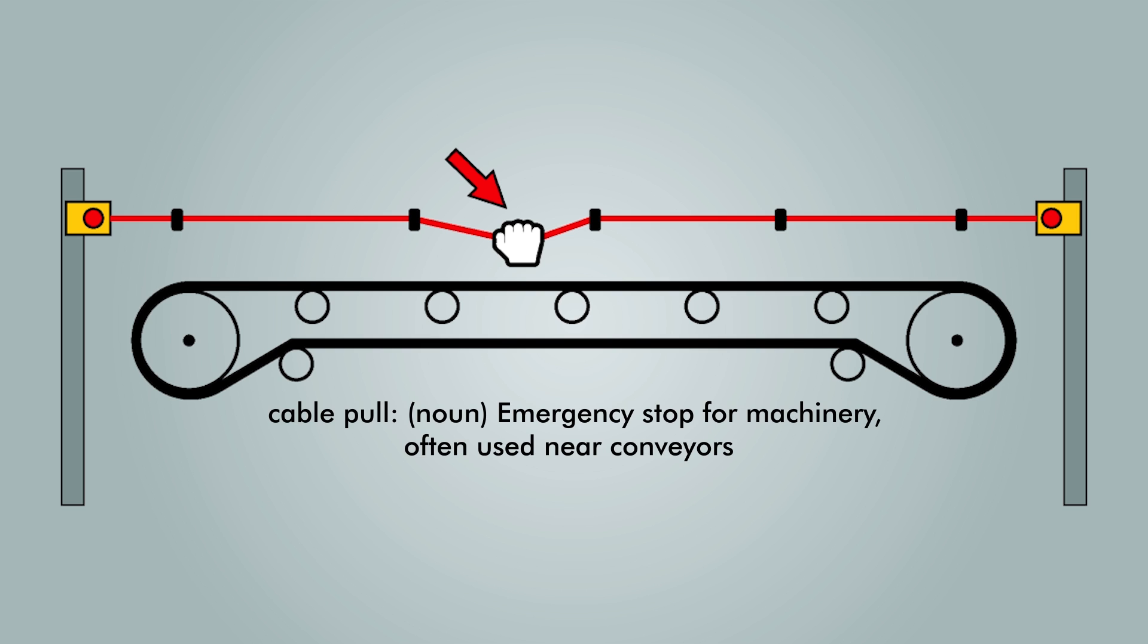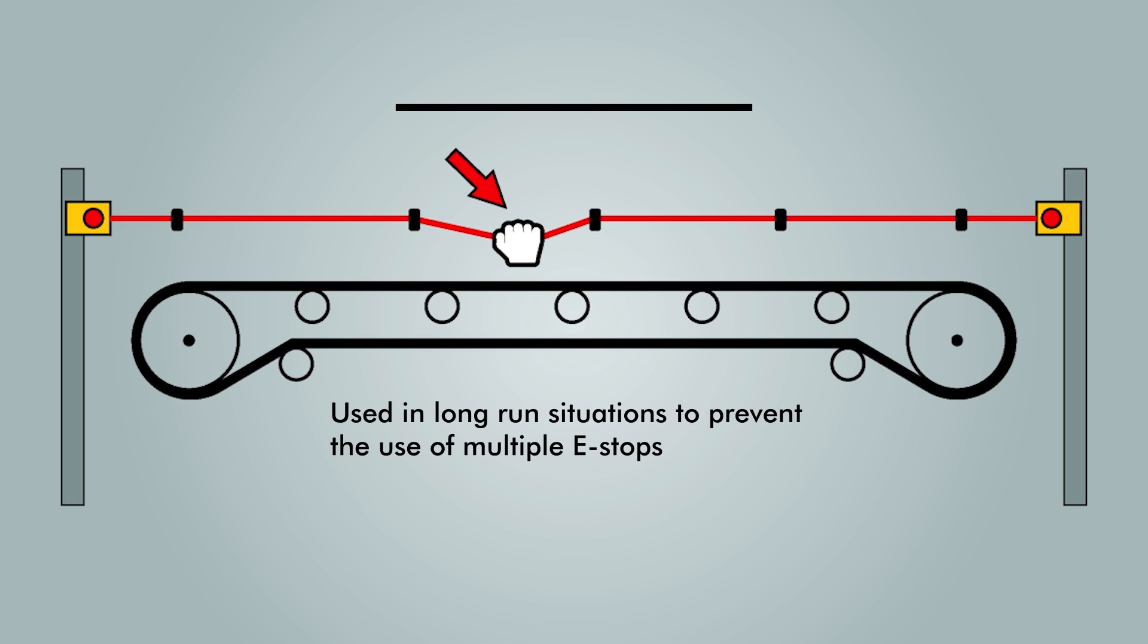Cable Pulls function as emergency stops for machinery, such as conveyors. It is often more convenient and effective to use a Cable Pull device for large hazard areas to provide local e-stop capabilities without having to install e-stop buttons every 5 to 6 feet.